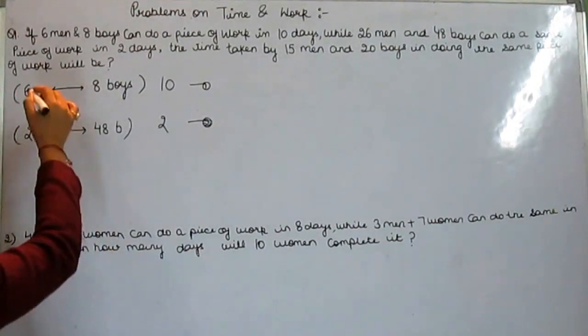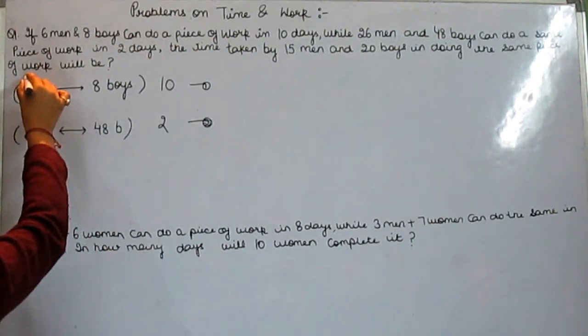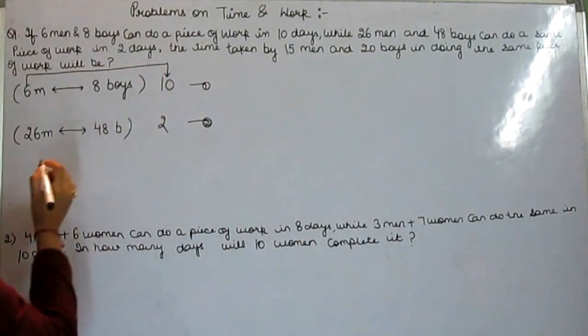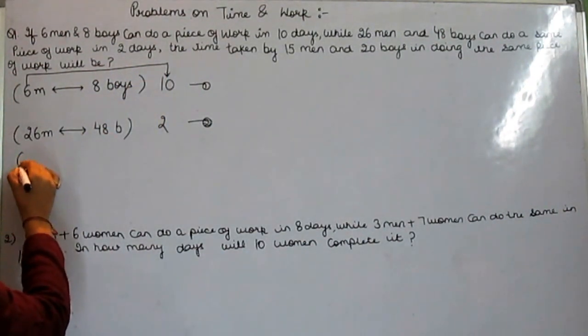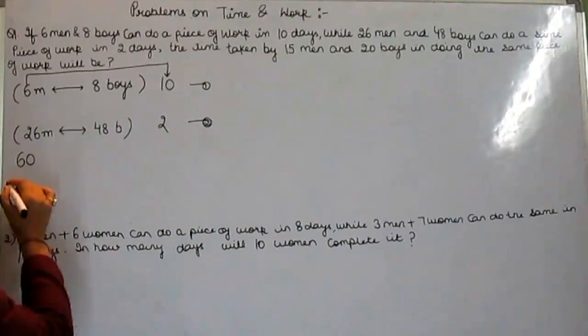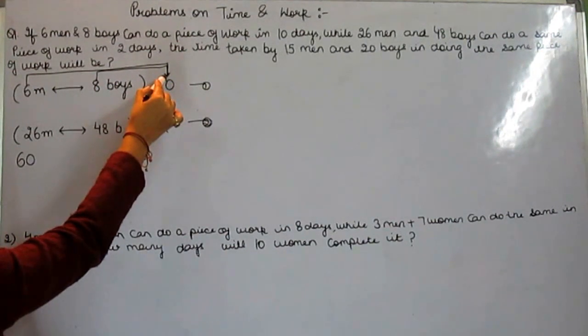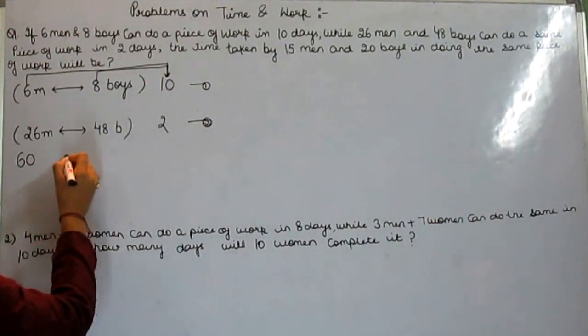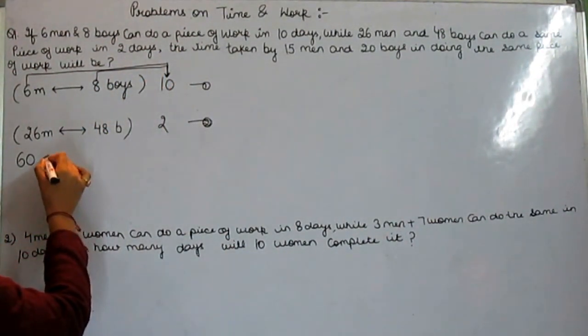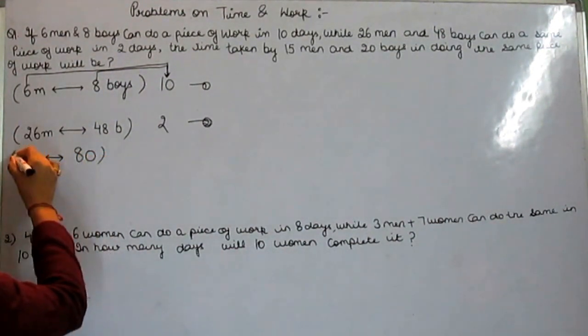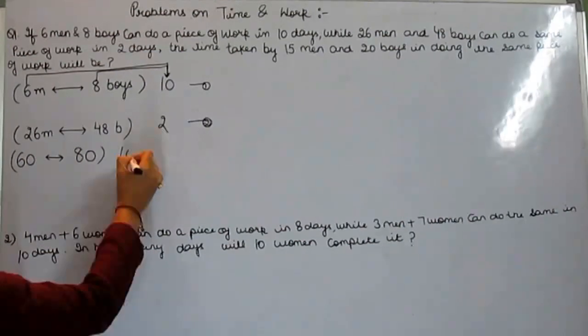The first step we need to follow is multiply this 6 with 10, you will get 60. And multiply this 8 with 10, you will get 80. And put this 10 as it is here.